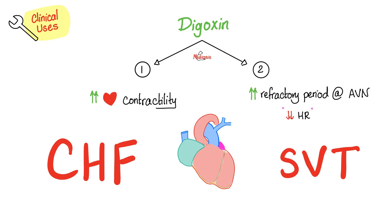Reason number two: digoxin can increase the refractory period at the atrioventricular node. It delays the conduction in the AV node, which can lower your heart rate. So if the patient suffers from palpitations, arrhythmia — especially tachyarrhythmia such as supraventricular tachycardia — we can give digoxin to slow the heart down. Digoxin has two purposes: boost cardiac contractility, or delay cardiac conductivity.